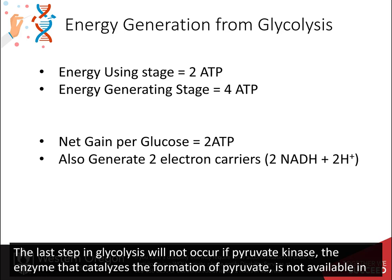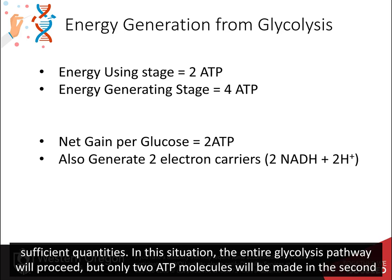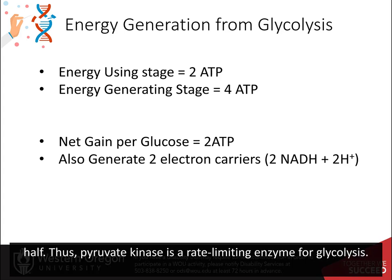The last step in glycolysis will not occur if pyruvate kinase, the enzyme that catalyzes the formation of pyruvate, is not available in sufficient quantities. In this situation, the entire glycolysis pathway will proceed but only 2 ATP molecules will be made in the second half. Thus, pyruvate kinase is a rate-limiting enzyme for glycolysis.